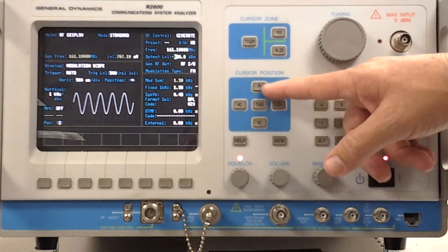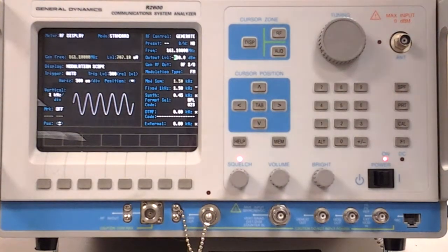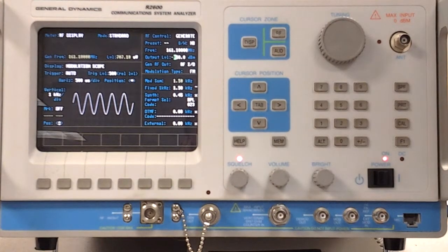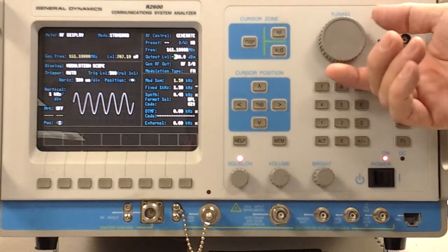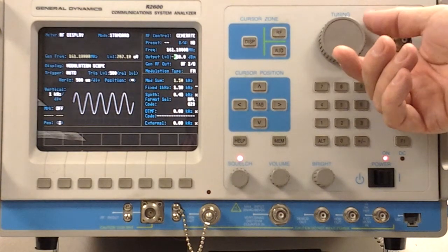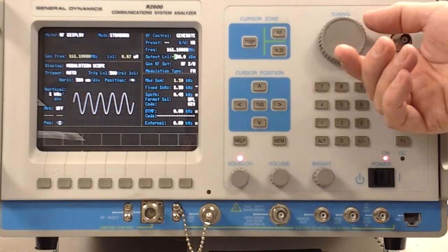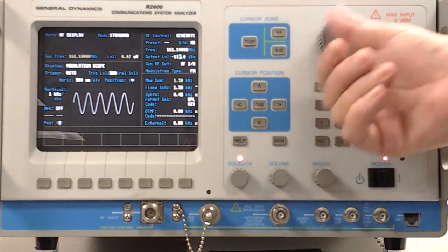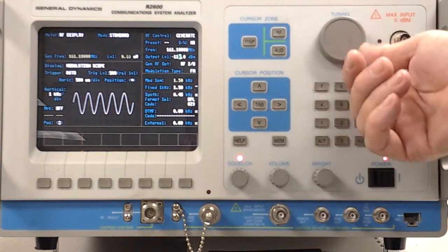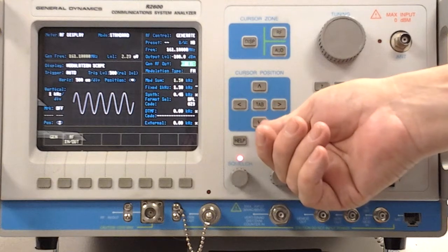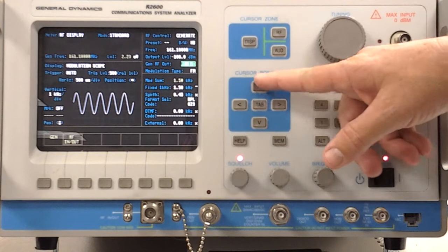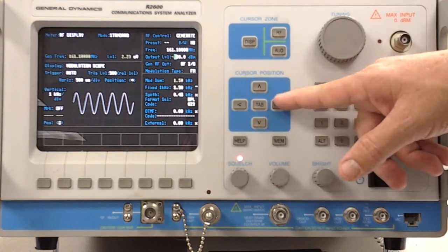Again, using the cursor position, we can drop down and adjust our output level. Being in Generate, now we're acting as the transmitter. The unit itself is acting as the transmitter. We can set our output level from a low of minus 130, and depending on our generator output port, which I'll cover shortly, would determine this range, this output range.